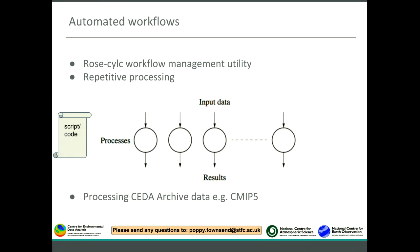More complex workflows include using workflow management utilities like Rose suite, which can only run on LOTUS and not on the sci analysis servers. If you have repetitive processing that can be made to run in parallel, it is a good idea to arrange your data accordingly. For example, if the same code needs to run on a set of data files, each process uses a different data file independently, allowing you to run them in parallel efficiently. An example is processing data files from the CEDA archive.